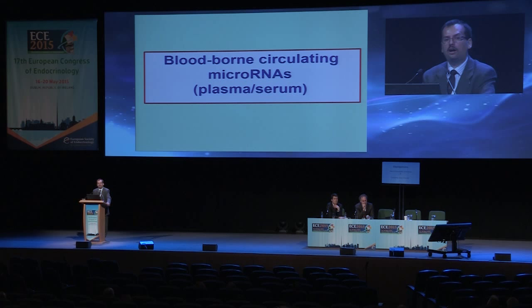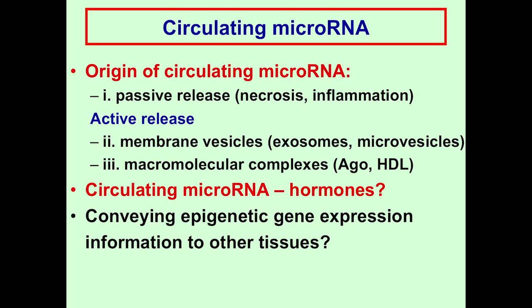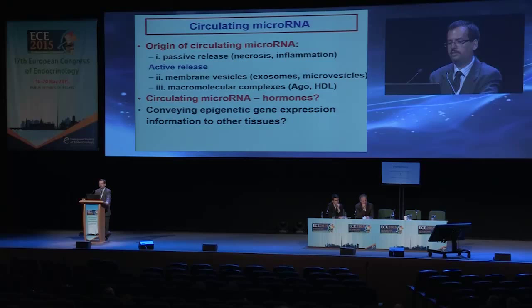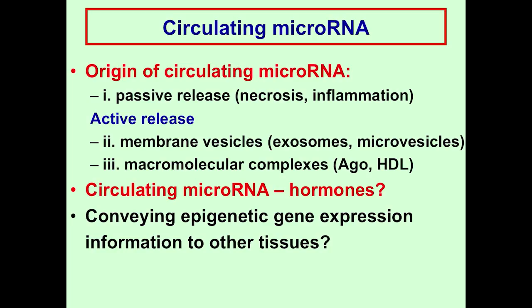I would now like to turn to the most novel aspect — blood-borne circulating microRNAs — as microRNAs were shown to be present not only in tissues but also in body fluids, including blood. These can be released via passive release due to necrosis and inflammation, but also via active release in membrane vesicles, exosomes, or microvesicles, or in macromolecular complexes with argonaute protein or high-density lipoprotein. Membrane vesicular and HDL-associated microRNAs were shown to enter other cells, and thereby circulating microRNAs might act as hormones conveying epigenetic gene expression information to other tissues.